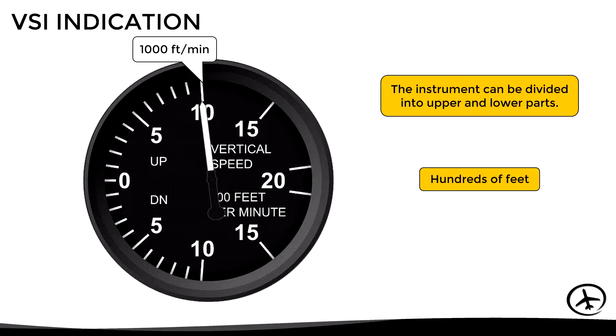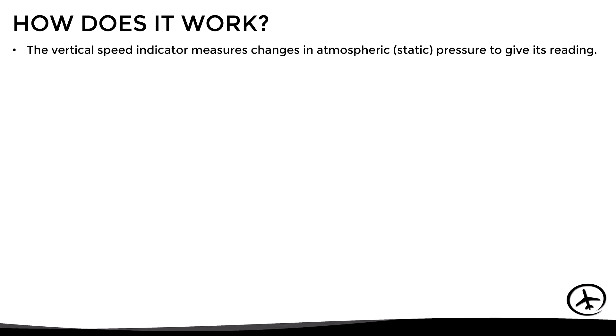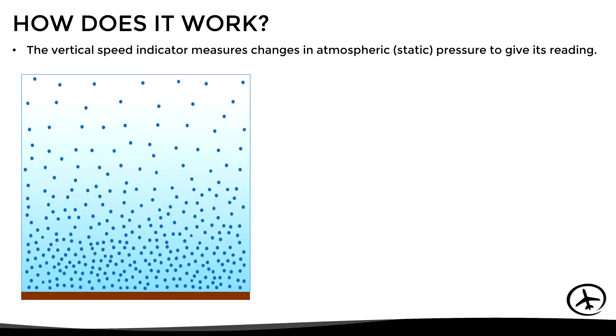Now that we know how to read the instrument, let's see how it actually works. The vertical speed indicator measures changes in atmospheric or static pressure to give its reading. It takes advantage of the fact that static pressure decreases with altitude.